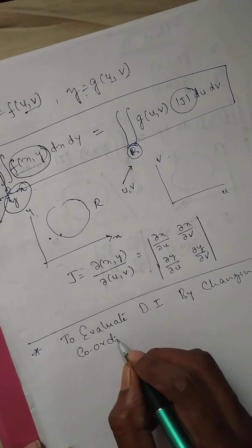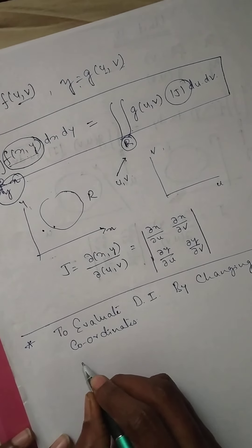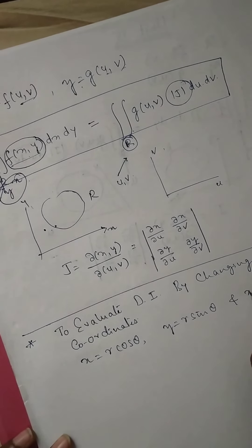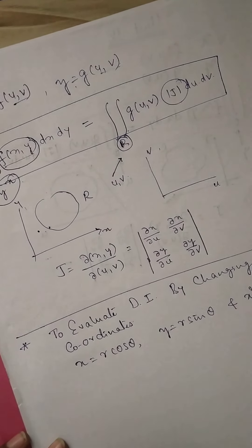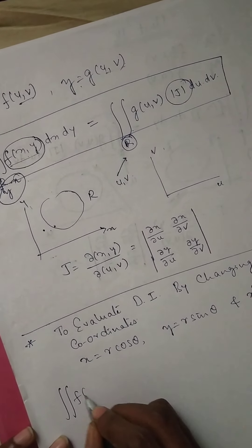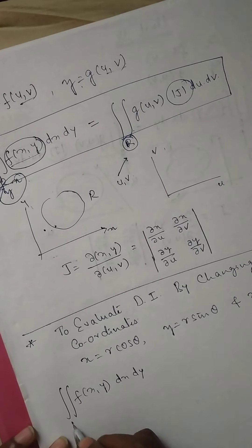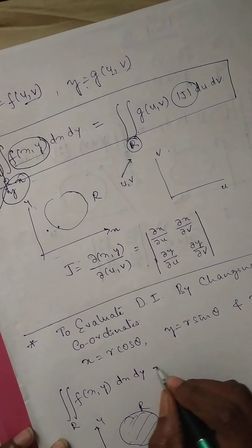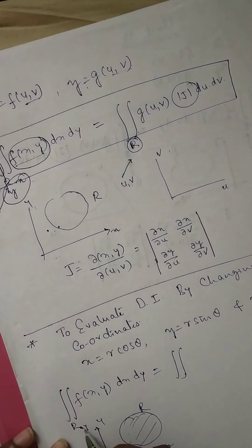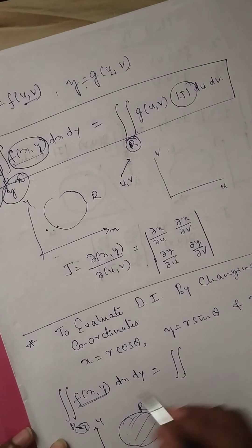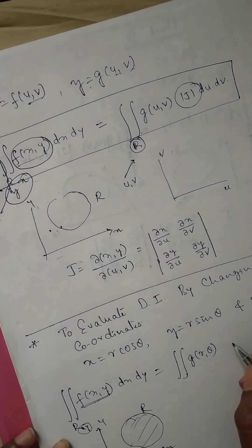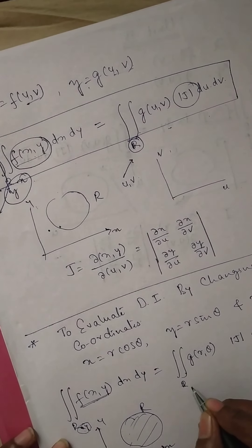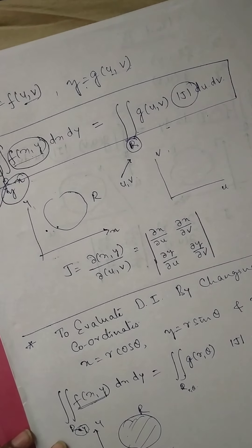By changing to polar coordinates — as we all know, x = r cosθ, y = r sinθ, and x² + y² = r². We want to evaluate a double integral f(x, y) dx dy in a region R defined in the xy plane. f(x, y) will become a function of r and θ, multiplied by the Jacobian J, dr dθ, in a new region defined in polar form with limits of r and θ.